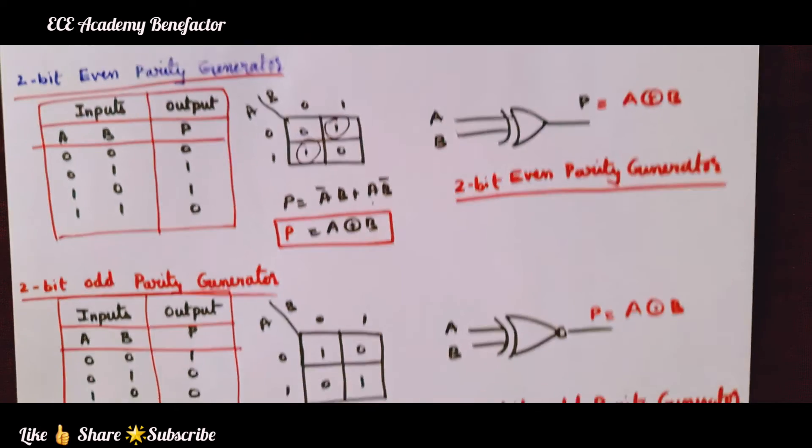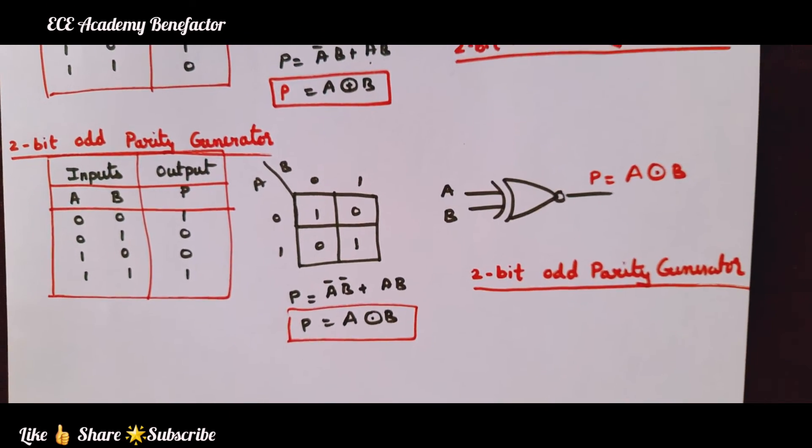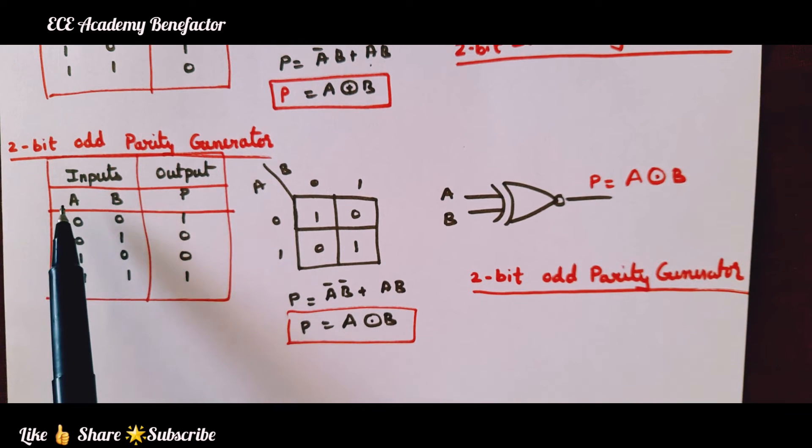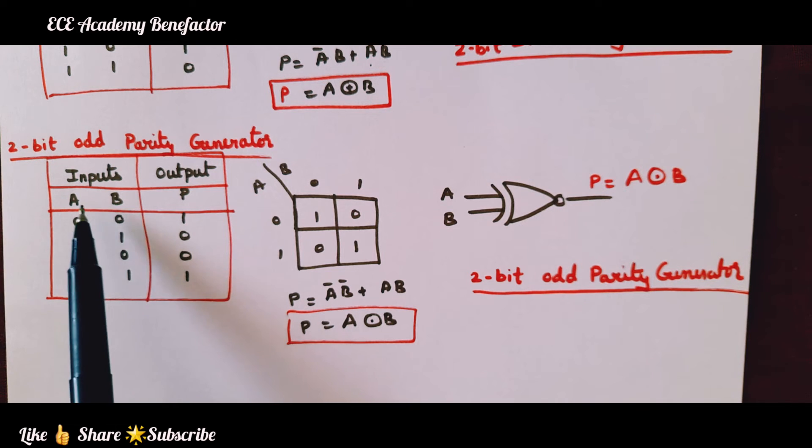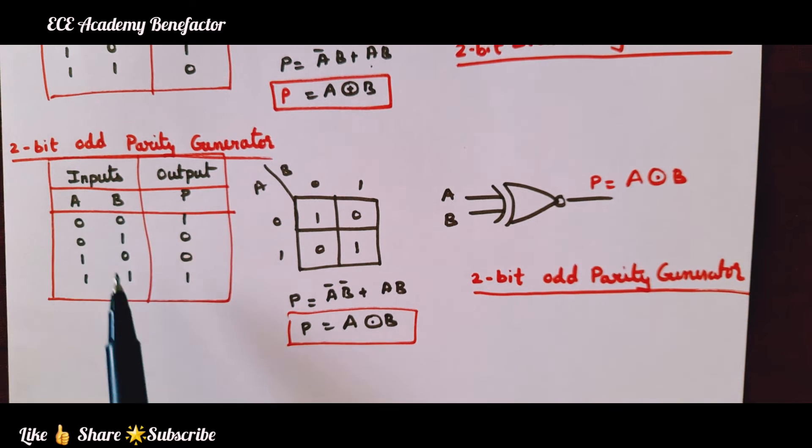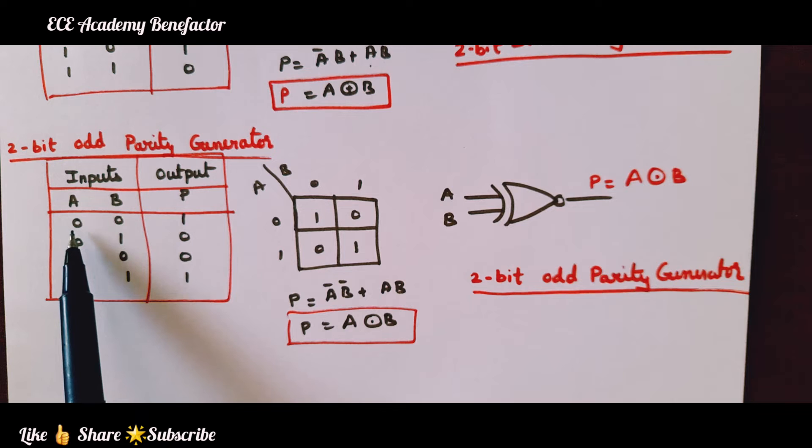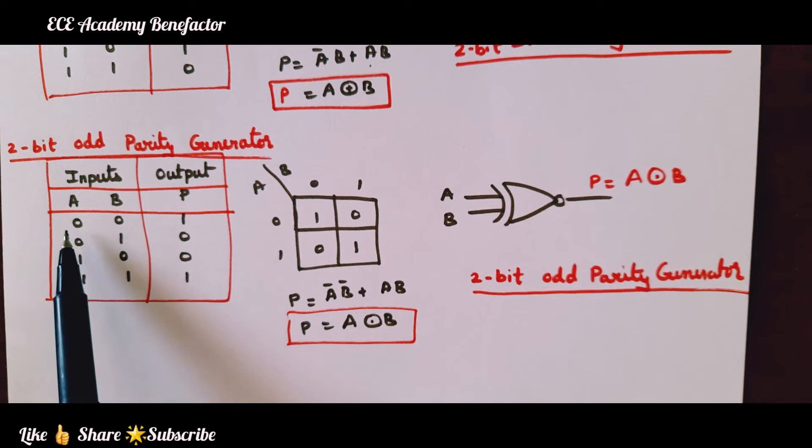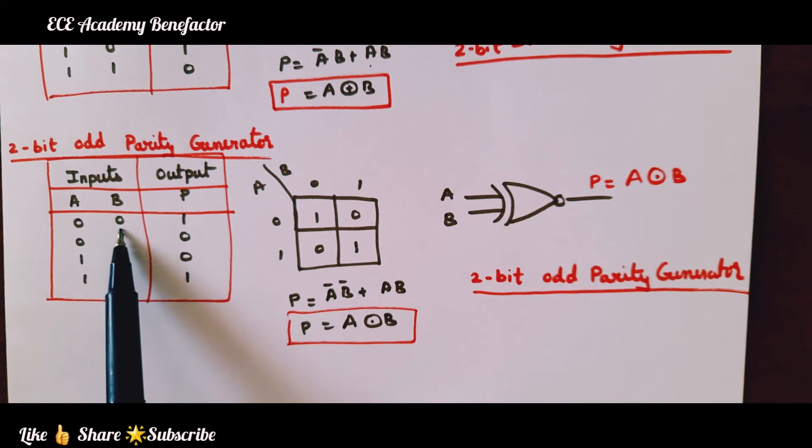Now let us see 2-bit odd parity generator. 2-bit inputs are A, B. For 2 inputs we can write 4 combinations: 0,0; 0,1; 1,0; 1,1. When this information 0,0 is transmitted we will check how many 1s are there. It is not having any 1.